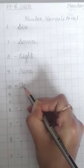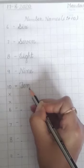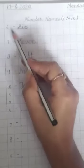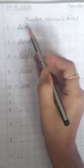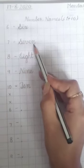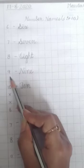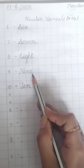Let's repeat it. 6, S-I-X, six. 7, S-E-V-E-N, seven. 8, E-I-G-H-T, eight. 9, N-I-N-E, nine. And 10, T-E-N, ten.